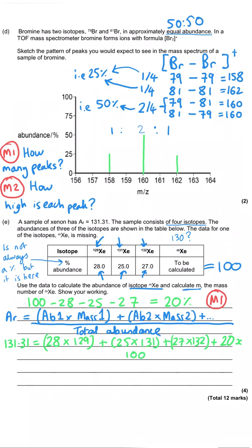And then we divide it by our total, which is of course 100%. So that would get us our second of our four marks. And then we need to rearrange that to find out what X is, our unknown mass.